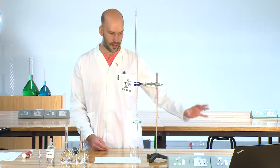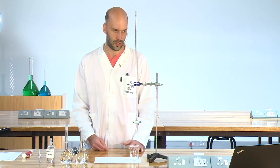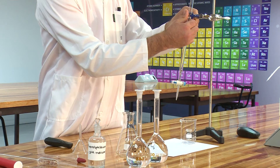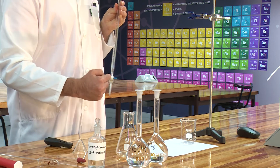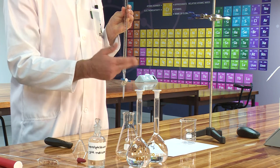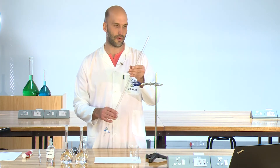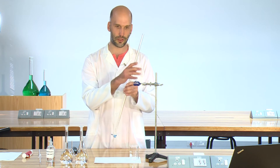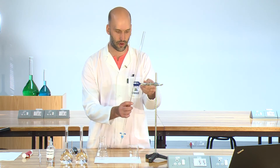Now that we've covered what titration is and all the academic theory, let's follow the procedure. What we are going to do with the buret: we must make sure that the stopcock of the buret is closed. If it is in a cross position, it means it is closed. If it is straight/parallel, it means it is open. So we must always make sure it is closed. Then we are going to fill the buret with our standard solution.